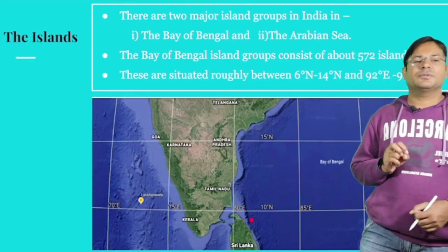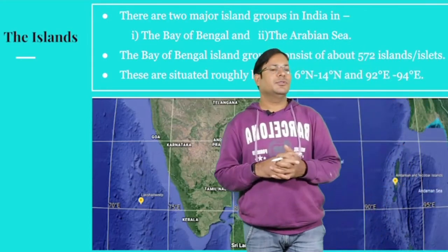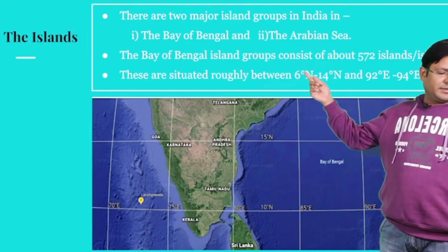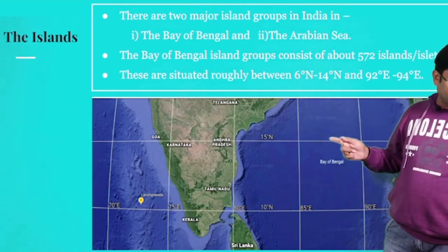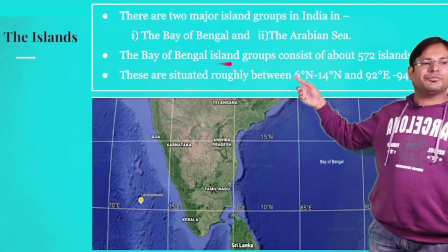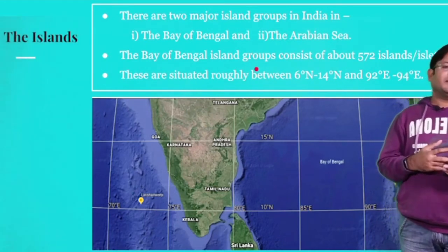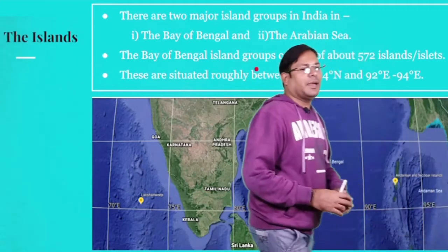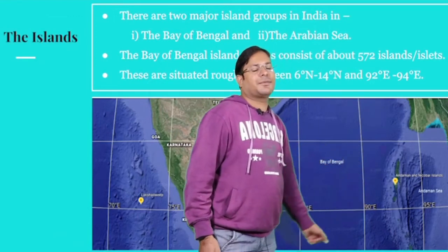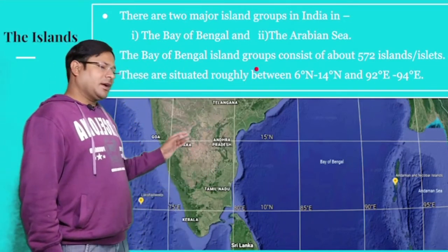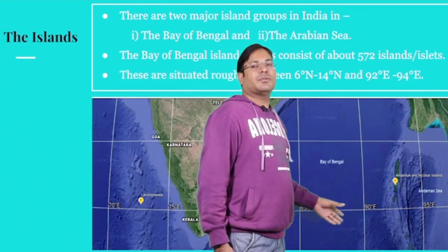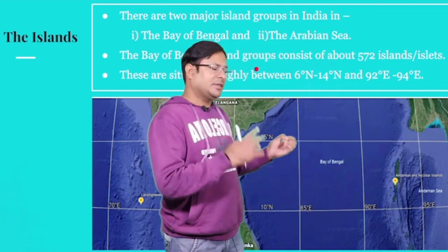The Bay of Bengal island group consists of about 572 islands or islets. These are the 572 island groups. These islands are very far away from the mainland of India, lying far in the Bay of Bengal, but they are also administered as part of the Indian Republic.